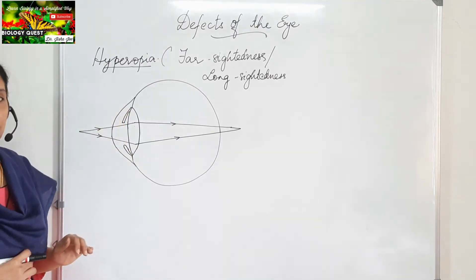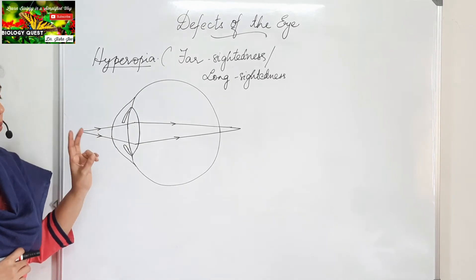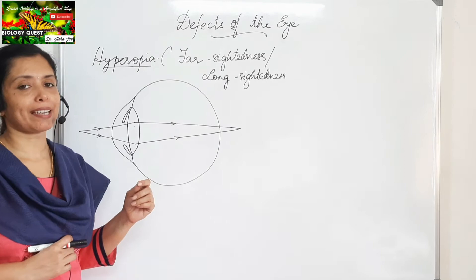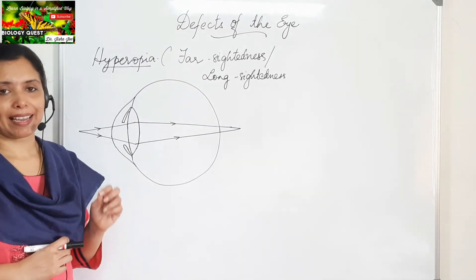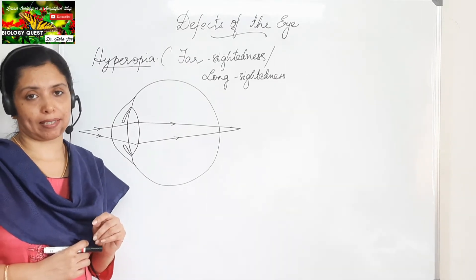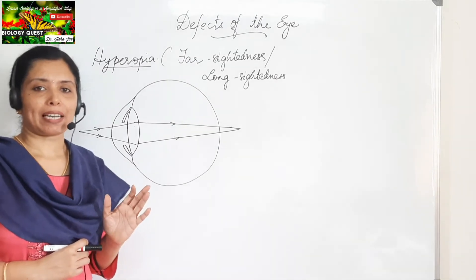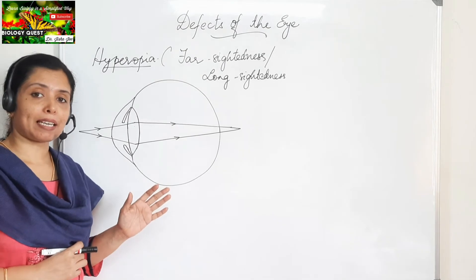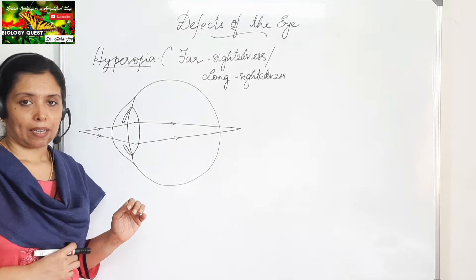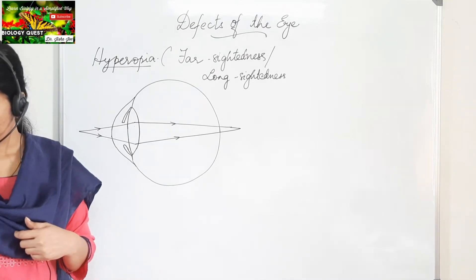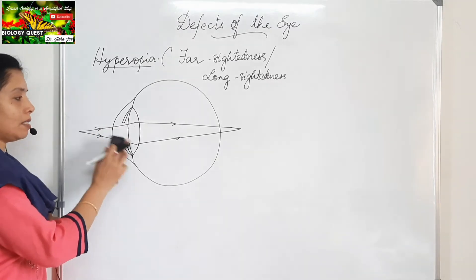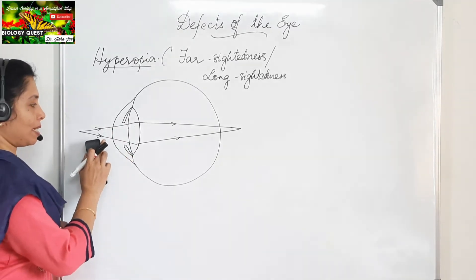So this is hyperopia. The first reason is the eyeball is shortened from front to back, and the second reason is the lens has become too flat or less convex. How can it be corrected? This defect can be corrected by using a convex lens. As with myopia, this can also be asked as a diagram-based question.